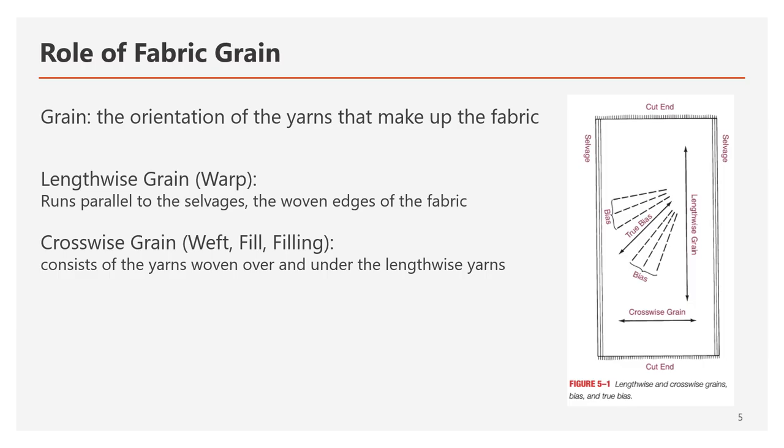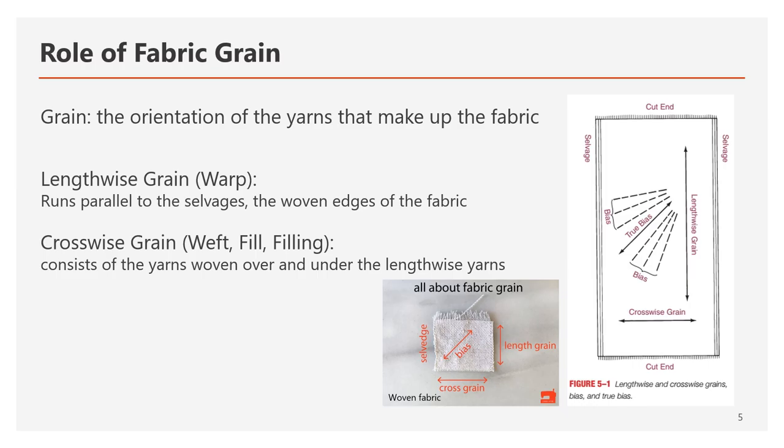On the other hand, the horizontal line based on the cut end is called the crosswise grain, also called weft, fill, or filling. This crosswise grain consists of yarns woven over and under the lengthwise yarns. Crosswise grain is less strong than lengthwise grain and has a slight stretch. In the picture, you can see both the lengthwise grain and crosswise grain for woven fabric.